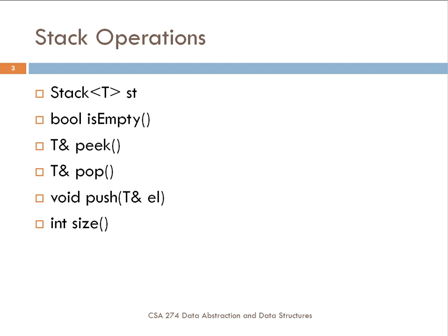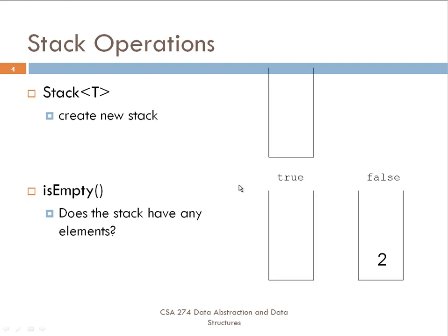The fourth operation is pop, which returns the element at the top of the stack and then removes it from the stack. The fifth is push, which puts a new element onto the stack. And finally, there is an operation for finding out the size.